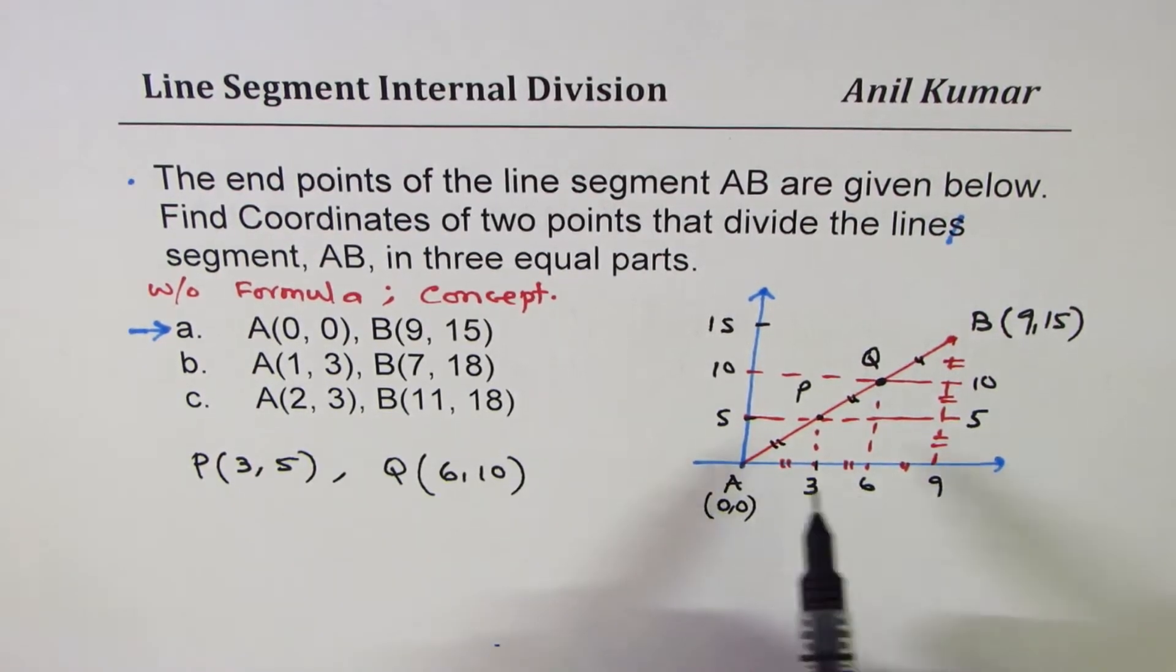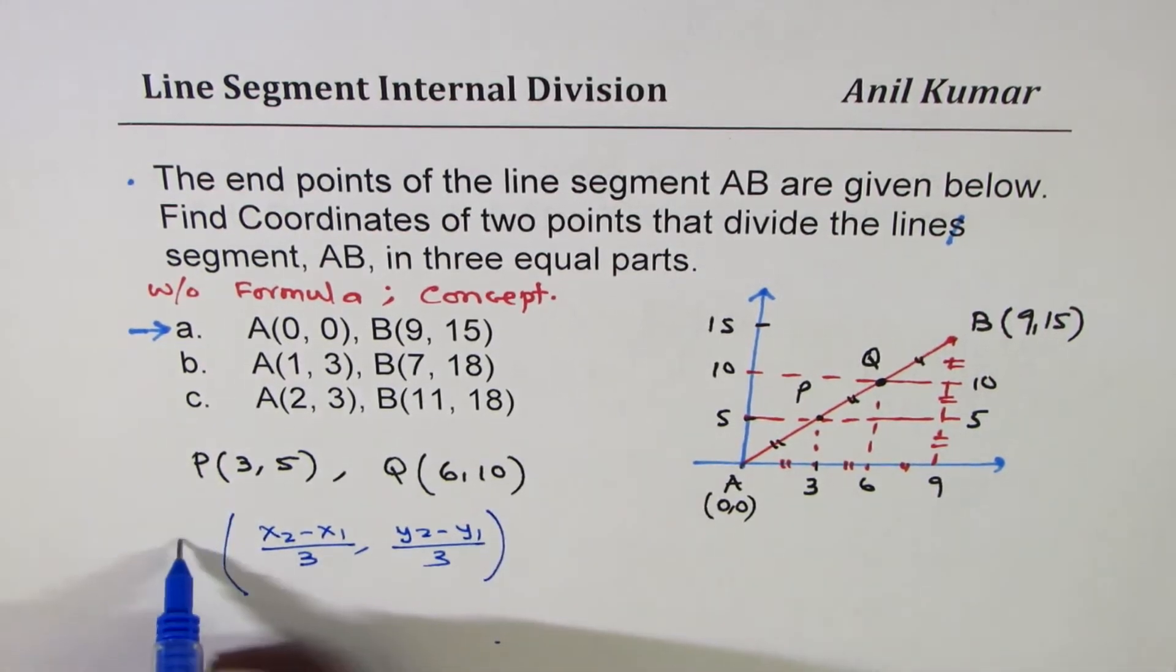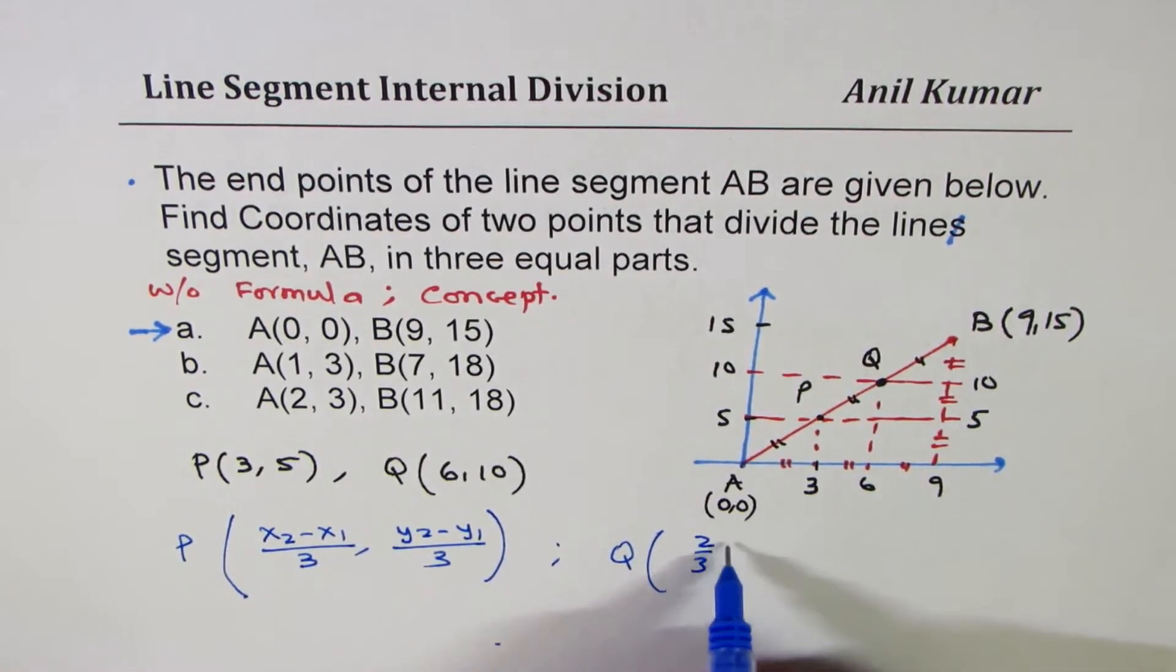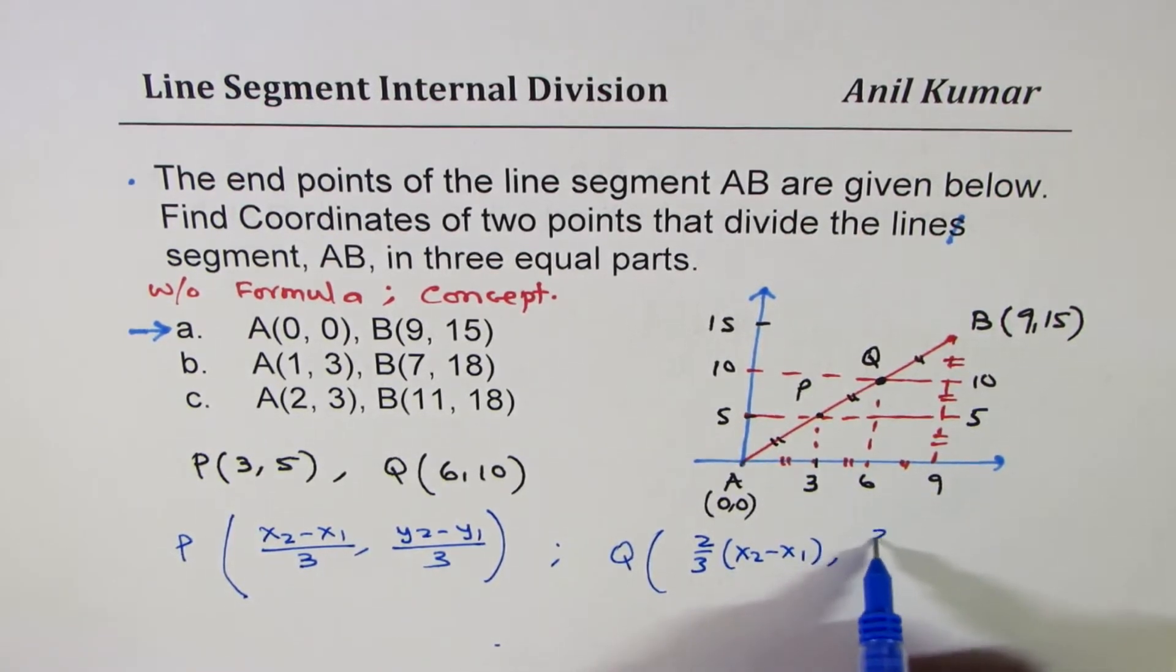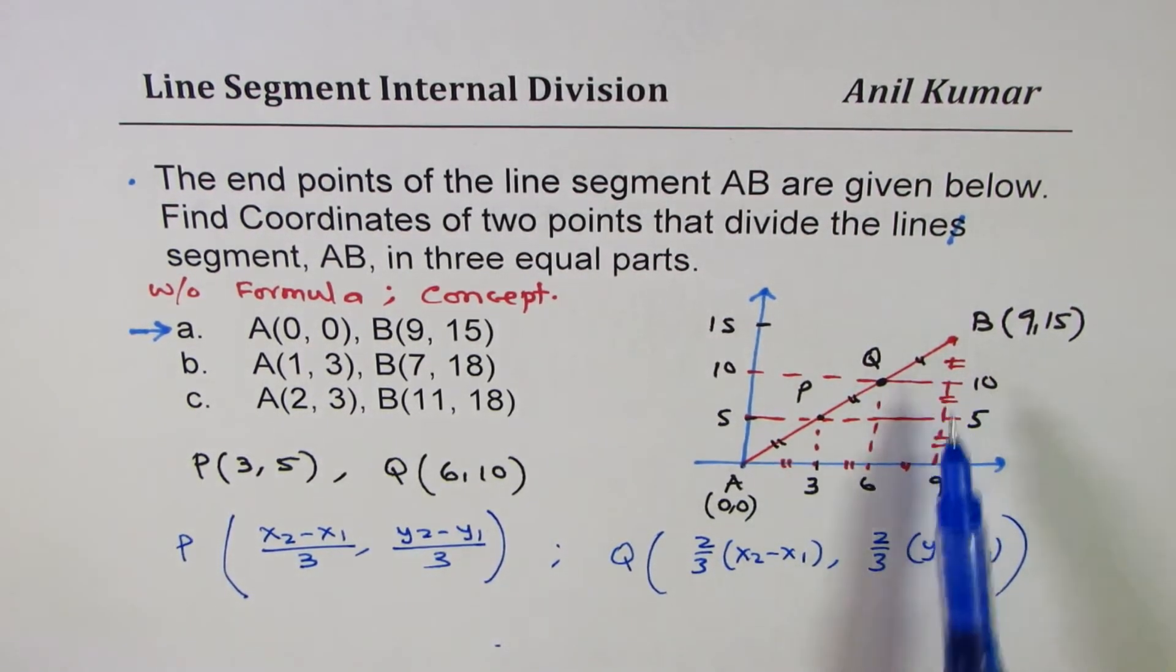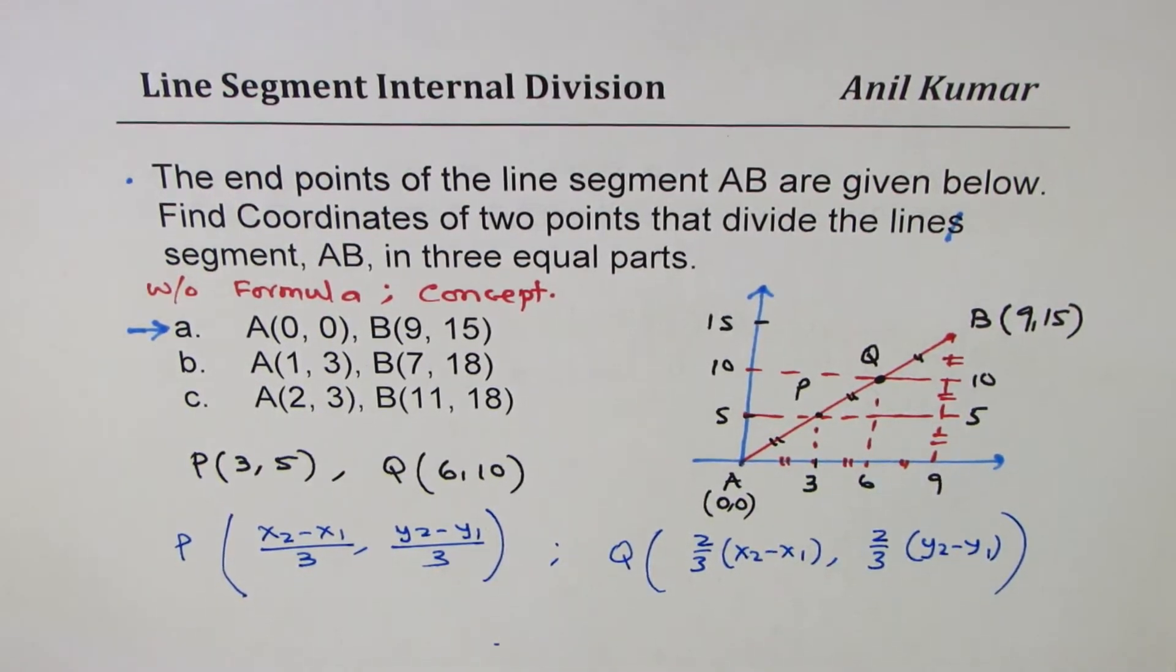Do you see how we got it? Basically, we are saying if there are two points, end points are A and B, then the formula is x2 minus x1 divided by 3 and y2 minus y1 divided by 3 for the point P. And for point Q, since it is 2 third, we will say 2 over 3 times x2 minus x1 and y coordinate is 2 over 3 times y2 minus y1. The total length has been divided by 3 equal parts. P is 1 unit of A and Q is 2 third of the units of A.